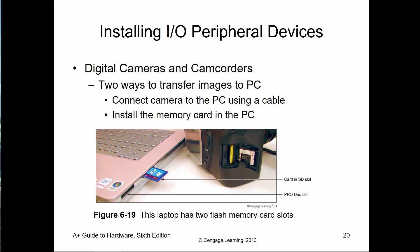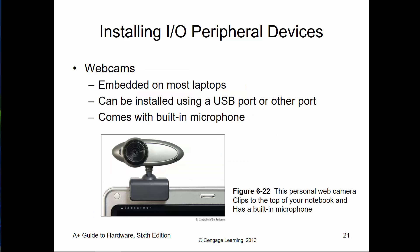Digital cameras can be both an input/output device when hooked up via USB and a mass storage device when they have a memory card. Most laptops have a memory card reader. Webcams capture video or photos for feeds to the computer, useful for video conferencing or recordings. They're USB-based and normally require additional software for full functionality.